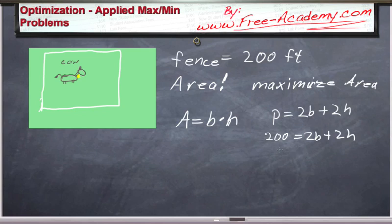So let's solve this equation to get area in terms of the base. We'll get 200 minus 2h equals 2 times the base. The base is equal to 100 minus h.